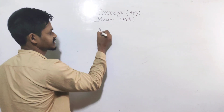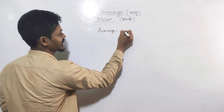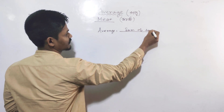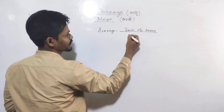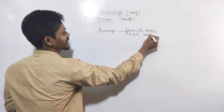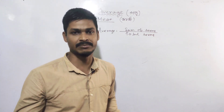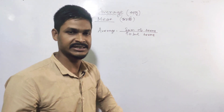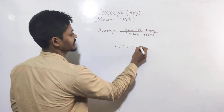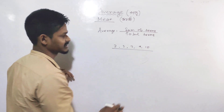What is average? Average is the sum of the terms divided by total terms. For example: 2, 5, 7, 9, 10. This set of numbers — we find their average.